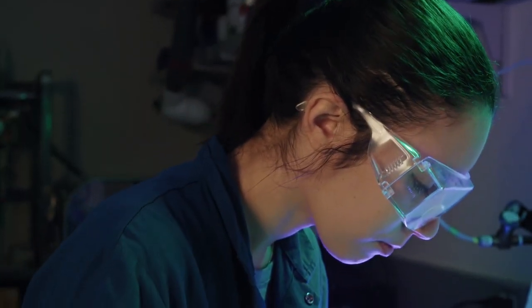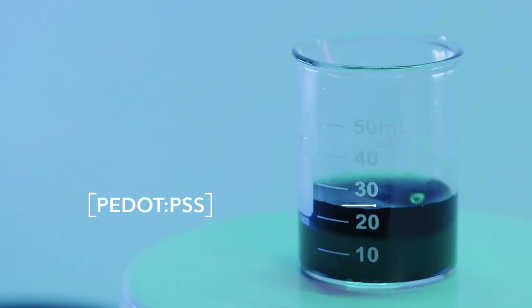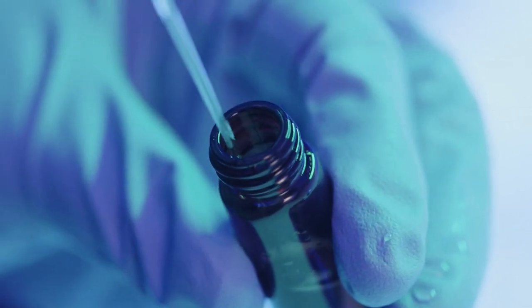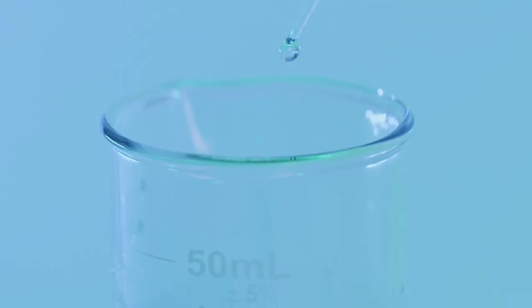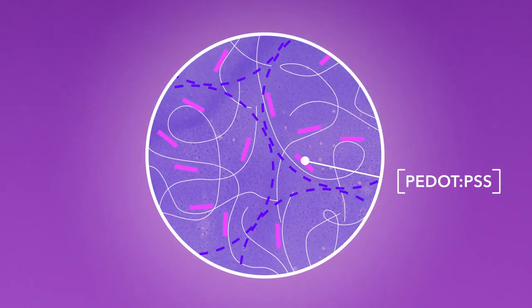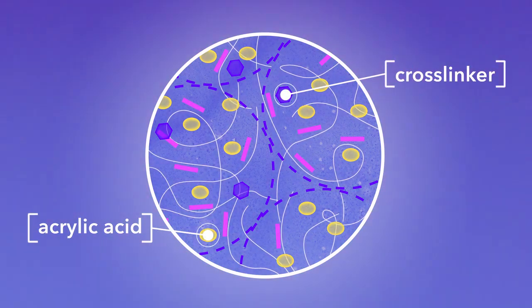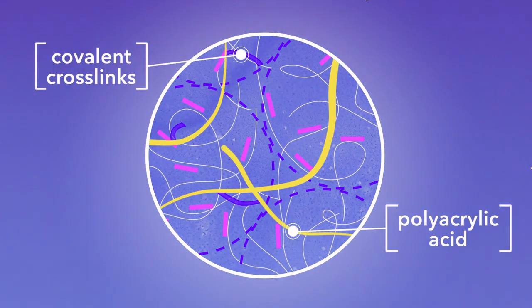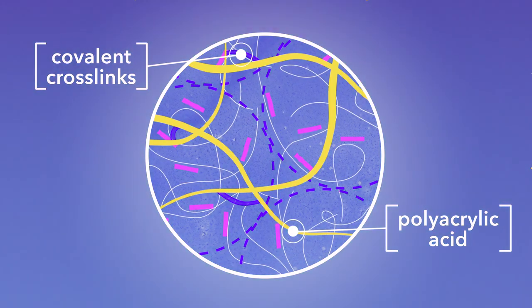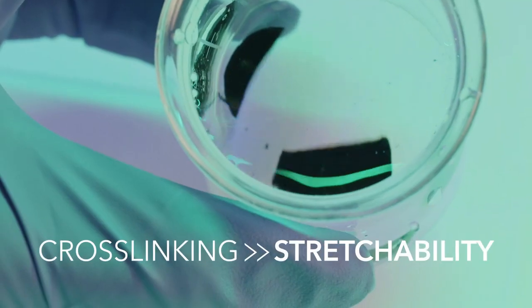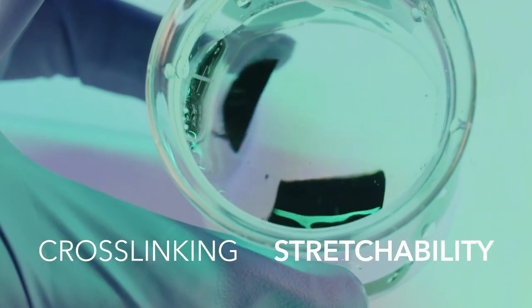We start by making hydrogels out of PEDOT:PSS, a very commonly used conducting polymer at a very low concentration. That serves as a conductive framework where we can then introduce other chemistries and other types of polymer systems. That can make the material extremely stretchable, extremely soft, extremely tough. All of which are really needed for interfacing with soft human tissue.